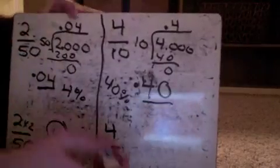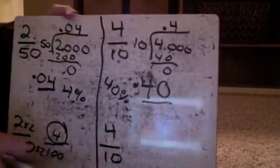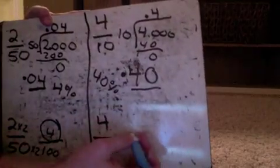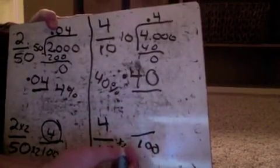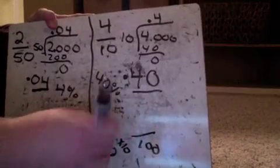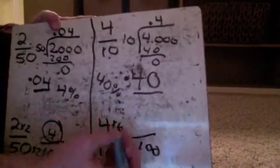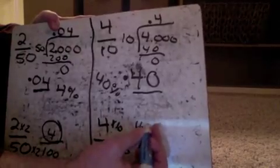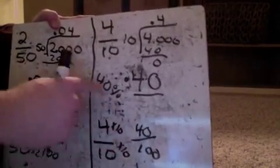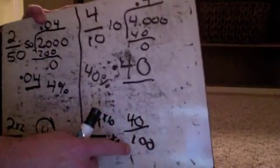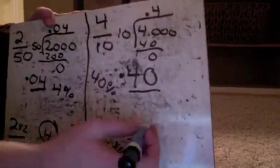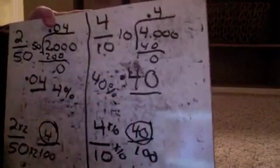Traveling over to this one. 10 definitely goes into 100. And that would be times 10. 10 times 10 is 100. I have to times the top by the same thing. 4 times 10 is 40. We got our 40%. If 100 is the bottom number, the top number is the percentage, which is 40%.